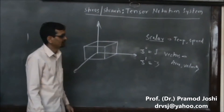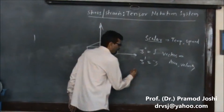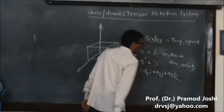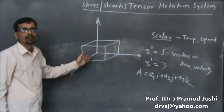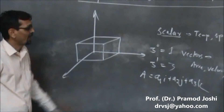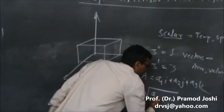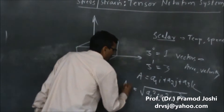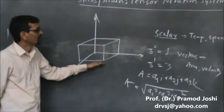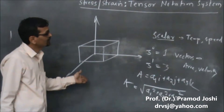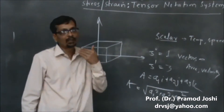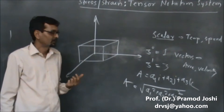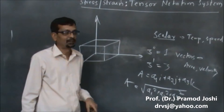We have already learnt direction cosines. We also know a vector a is a1·i plus a2·j plus a3·k, where i, j, k are unit vectors in the direction of the three axes. The direction will be given by the respective direction cosines, which means that a tensor of the first order requires, apart from magnitude, a description of its direction.